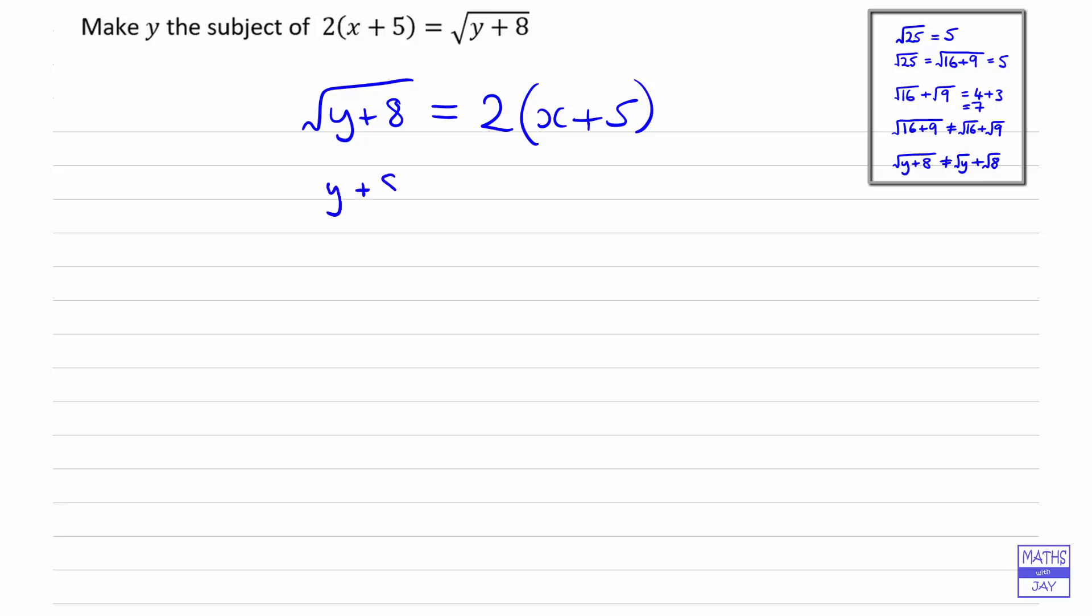So if we square the left hand side, we get y plus 8. And if we square the right hand side, let's just write it down in a big square bracket to make it absolutely clear what we're doing, so we're squaring both sides.